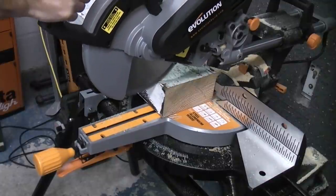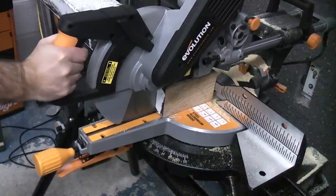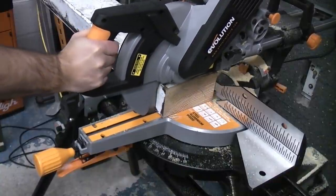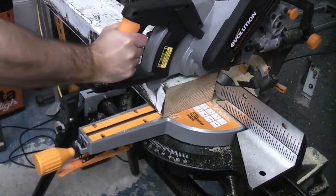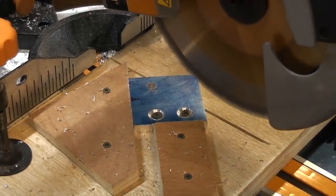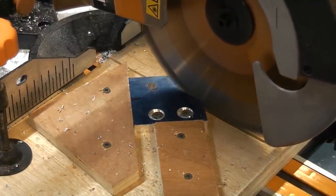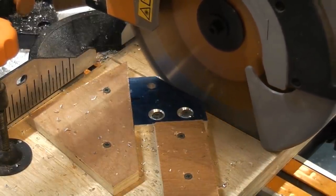Mitre saws are one of the most useful saws that you can get, but they are mainly made for cutting large items. However, if you make a jig, you can actually cut small items on them quite safely. That then means that your mitre saw is a lot more useful than what it would be normally.